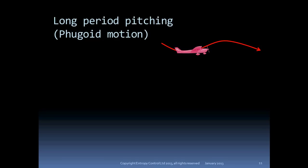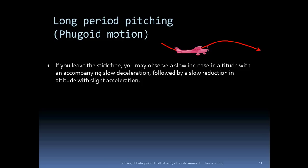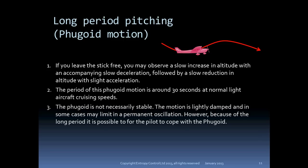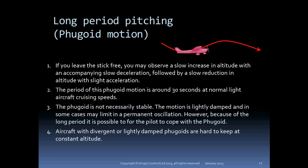Now let's have a look at the fugoid. The fugoid motion may or may not be stable. It involves a slow climb with decreasing speed, followed by a slow descent at increasing speed, and repeats ad infinitum. The period is about 30 seconds for a light aircraft. Even when the motion is stable or limiting, pilots can generally cope without too much trouble, though maintaining altitude can be a little tricky. Cirrus aircraft have a reputation for exhibiting a fugoid under certain circumstances, making maintaining altitude without an autopilot a bit of a chore.